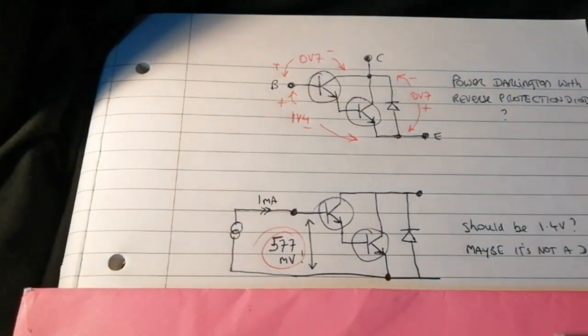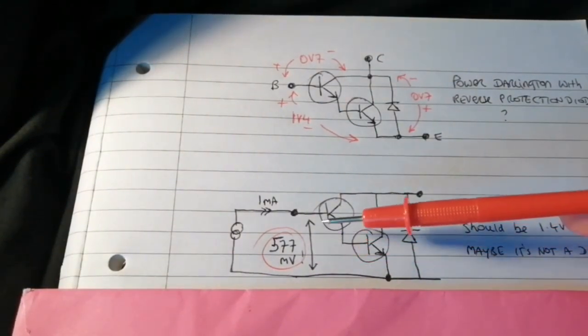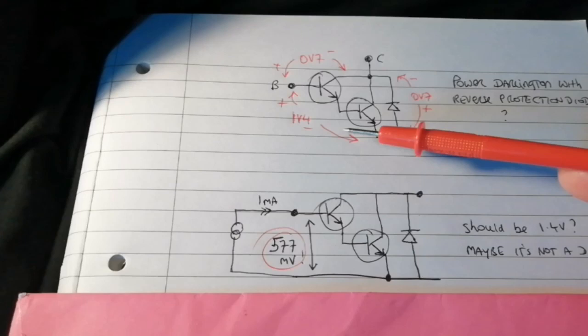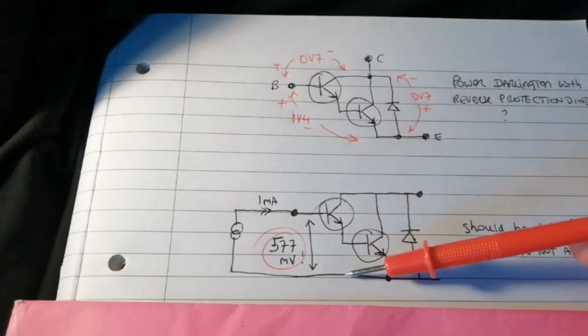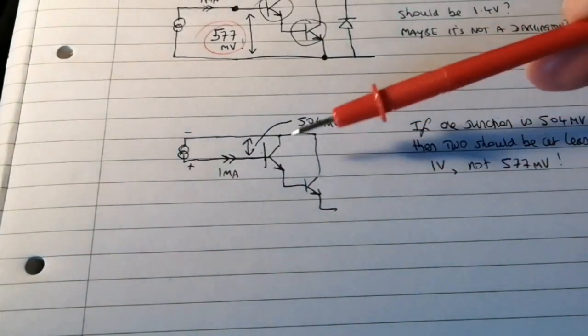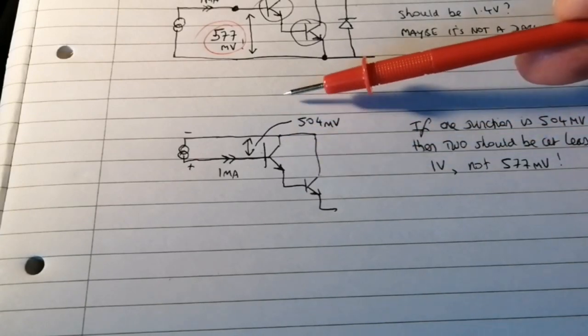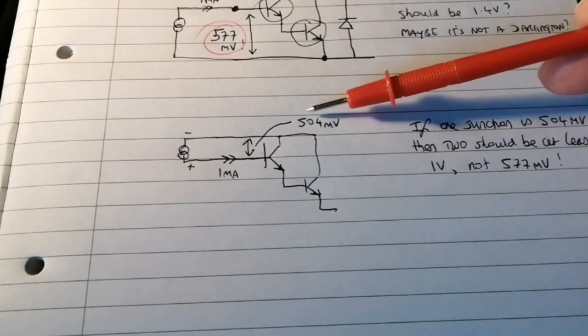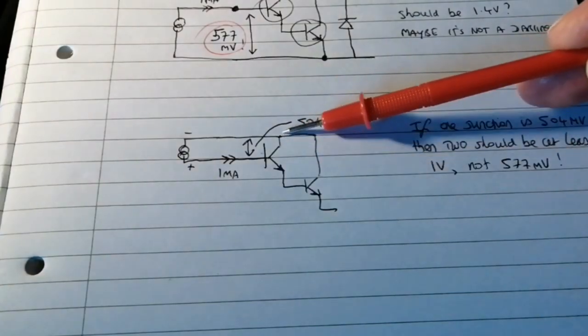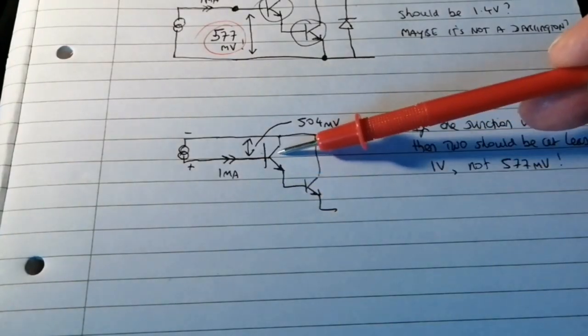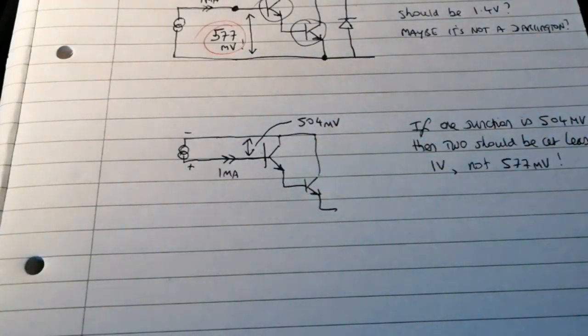But what I actually got was this. I got 577mV from base to emitter, and I thought, well, it should be 1.4V, so maybe it's not a Darlington. Next I measured the collector-base junction backwards and I would expect to find 700mV. I got 504. So 1mA produces 504 through that junction. It should add up to around about a volt, not 577mV. What's going on?